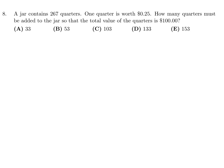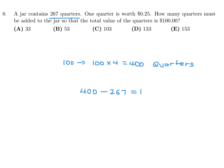A jar contains 267 quarters. One quarter is worth 25 cents. How many quarters must be added so that the total value is $100? $100 would be 100 times 4, which is 400 quarters. So you need 400 minus 267, which is 133. That's how many quarters you need to add to get up to 400, which equals $100. The answer is D.